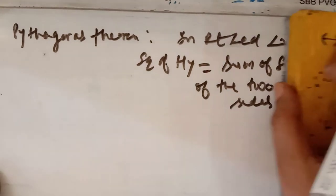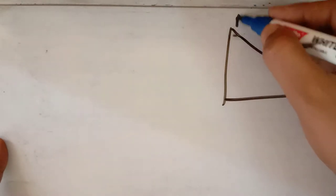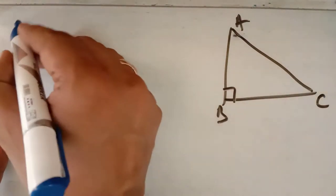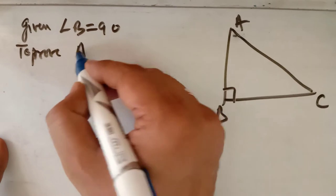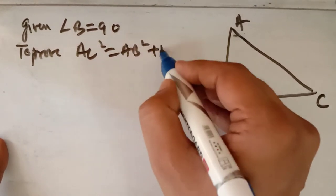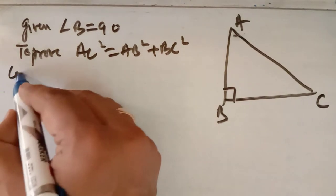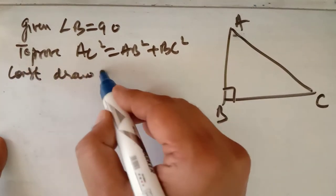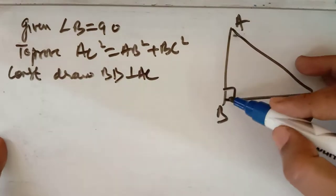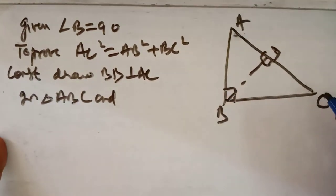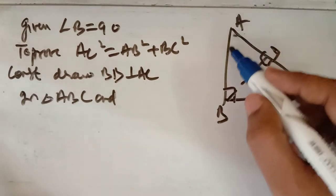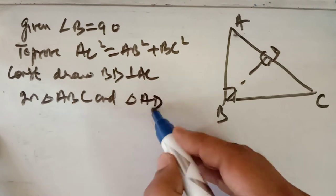In a right-angled triangle, the square of the hypotenuse equals the sum of the squares of the remaining two sides. Let us take right-angled triangle ABC with right angle at B. Given: angle B equals 90 degrees. You have to prove: AC² = AB² + BC². For construction, draw BD perpendicular to AC — draw a perpendicular to the hypotenuse.